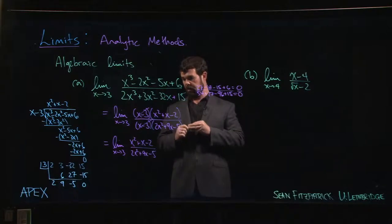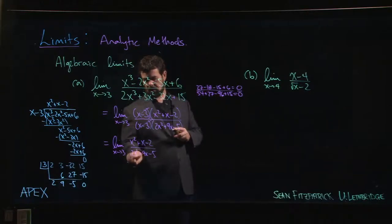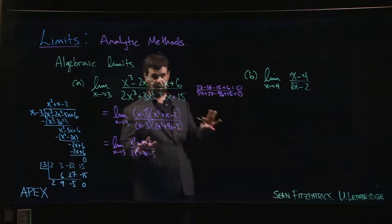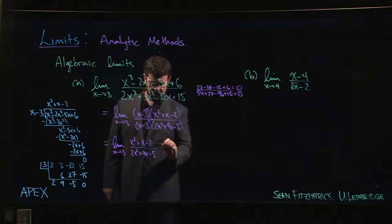So we try plugging it in. So we say okay, 2 times 9 is 18, plus another 18 minus 5. Yeah, that's, we're safe. That's not zero, so we can now go ahead and evaluate.